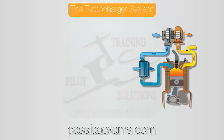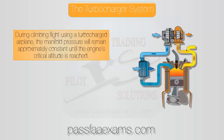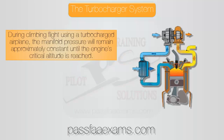As your airplane climbs to higher altitudes, the density of the air decreases. This results in a decreased power output of a non-turbocharged engine. By compressing the air by means of a turbocharger, the turbocharged engine will maintain the pre-set power as altitude is increased, or at least until the engine's critical altitude is reached.